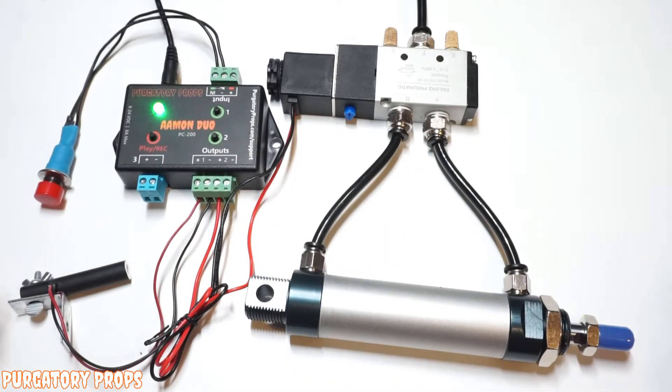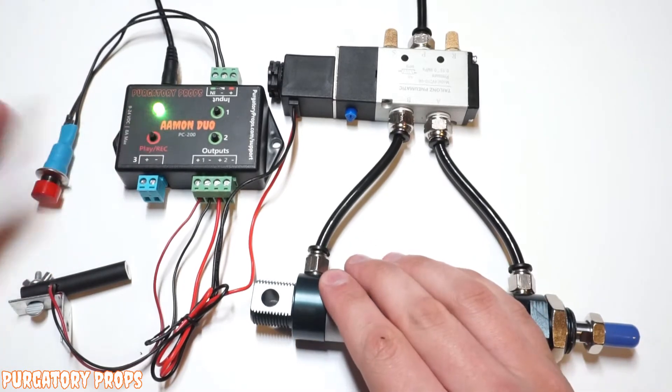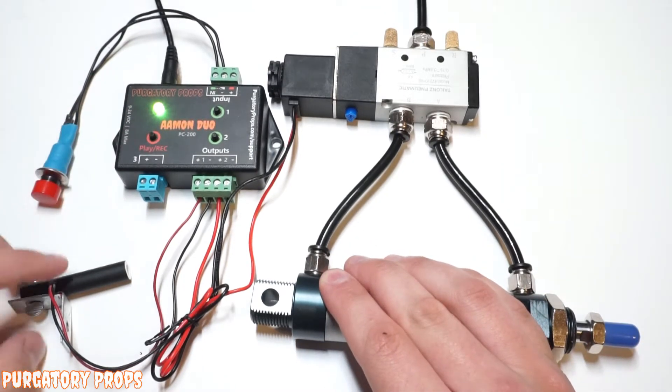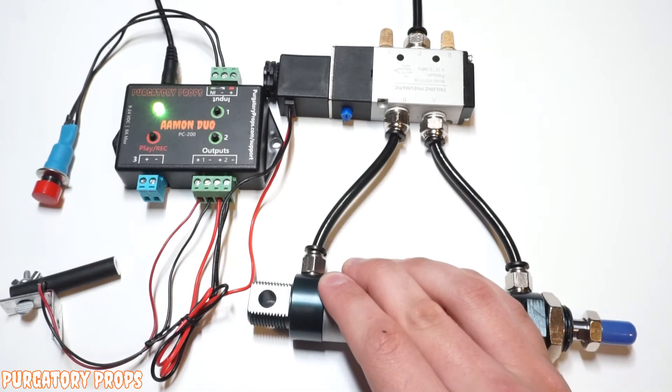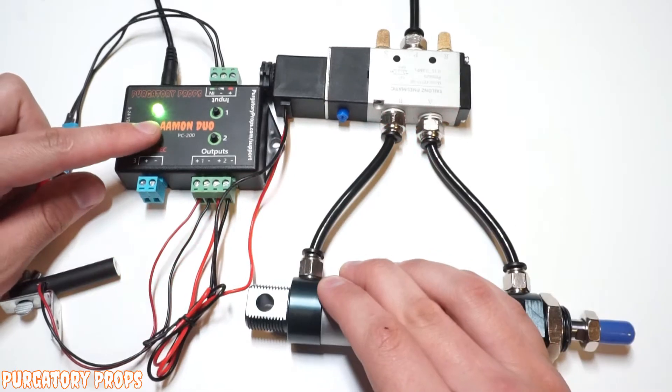Then press play record again to stop recording. To play that back, you can just push the button and it will play it back just as you recorded it. So to stop this at any time, just press that button again.